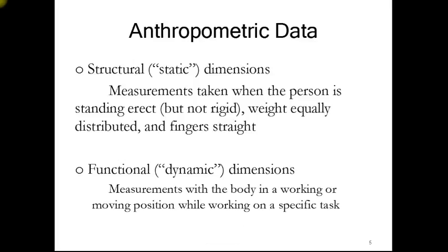We have two kinds of anthropometric data dimensions. One is structural or static dimensions, where someone is standing tall with their weight equally distributed and their fingers are straight — that's our classic anthropometric data. But we also take dynamic dimensions, where the body is working in a specific task.